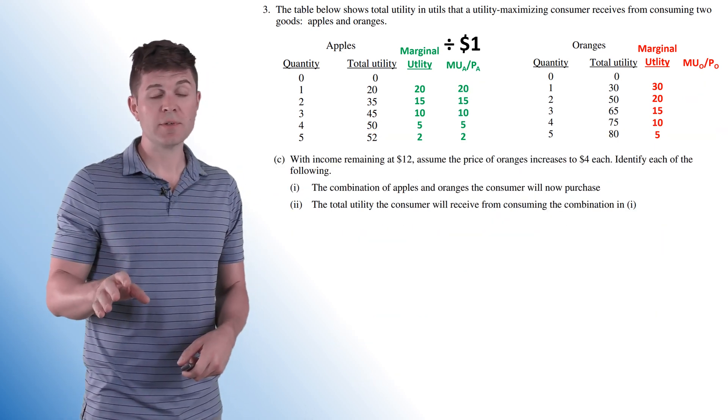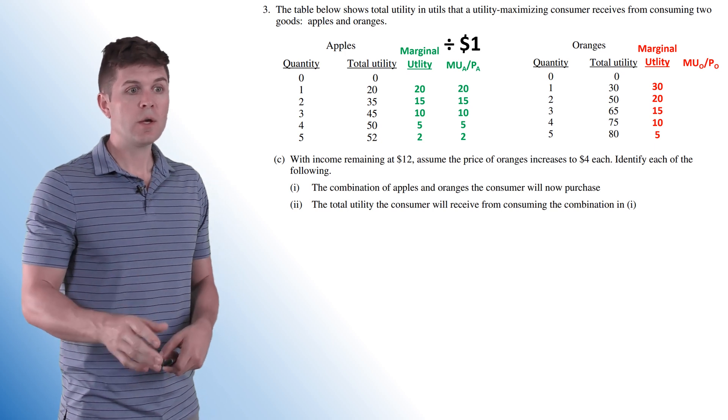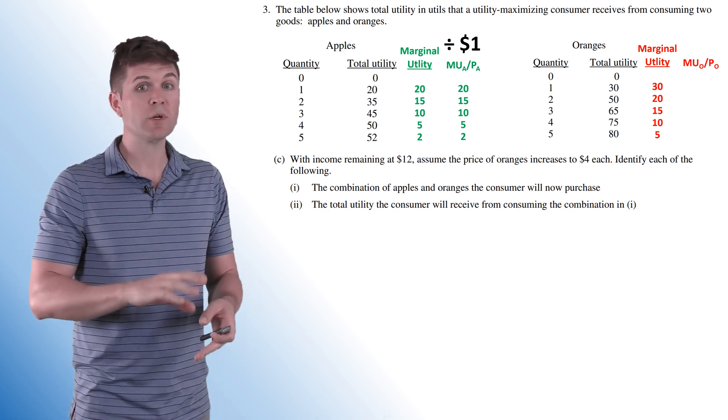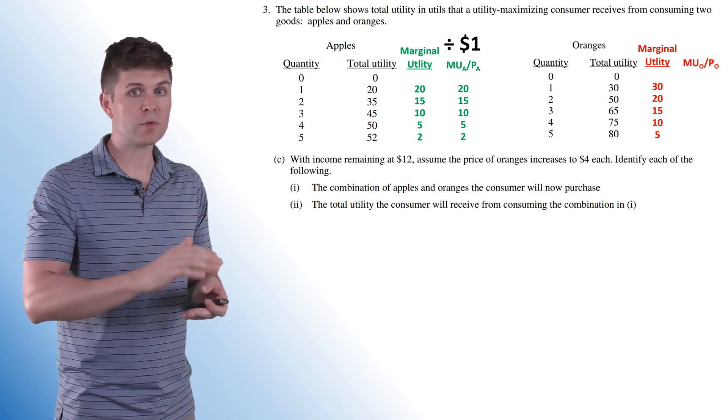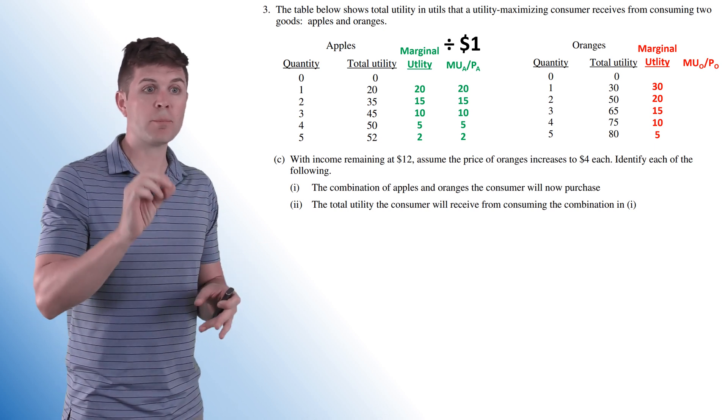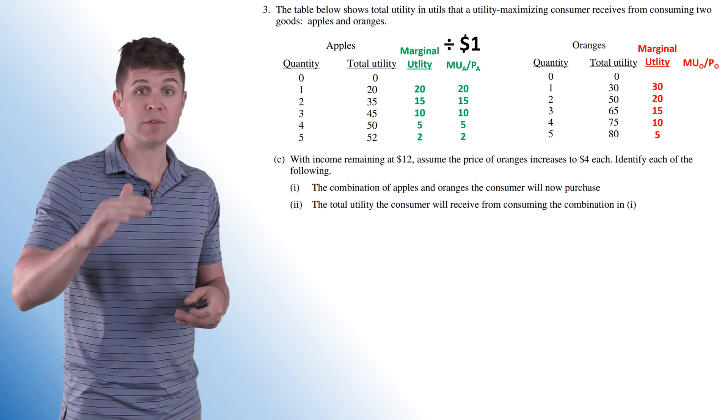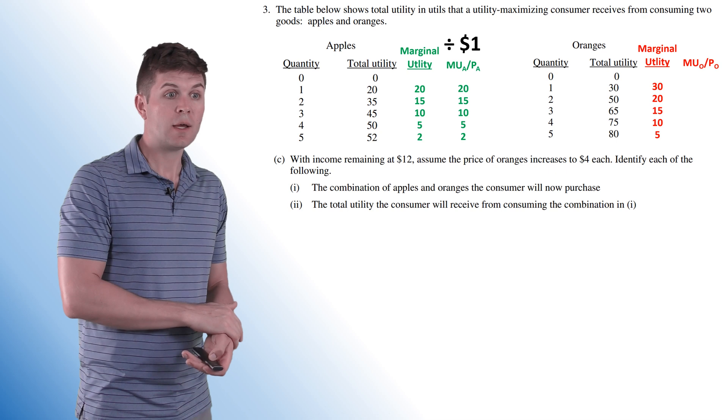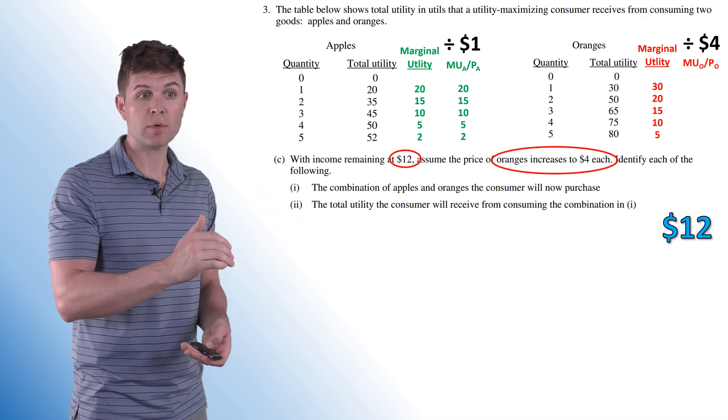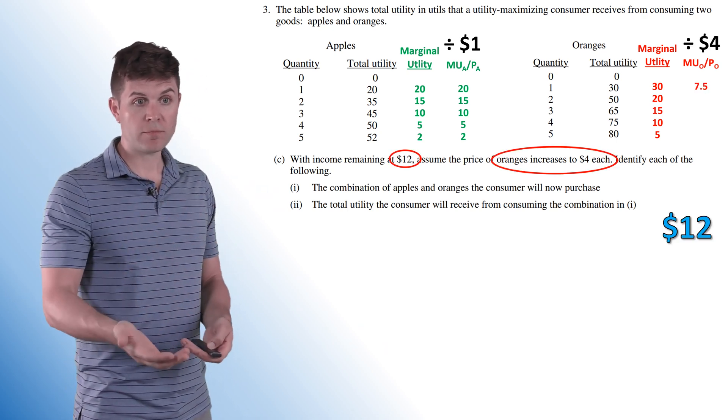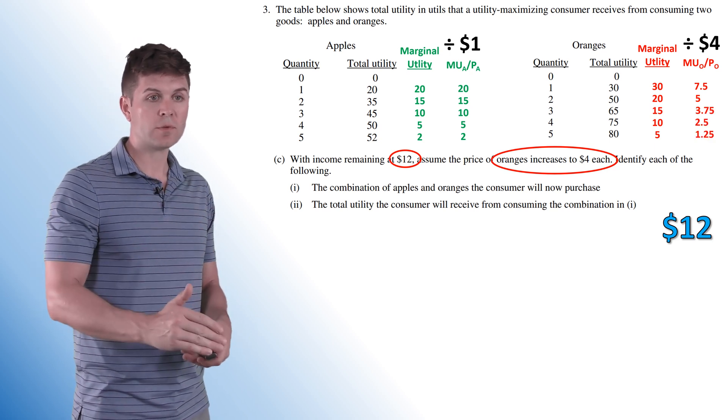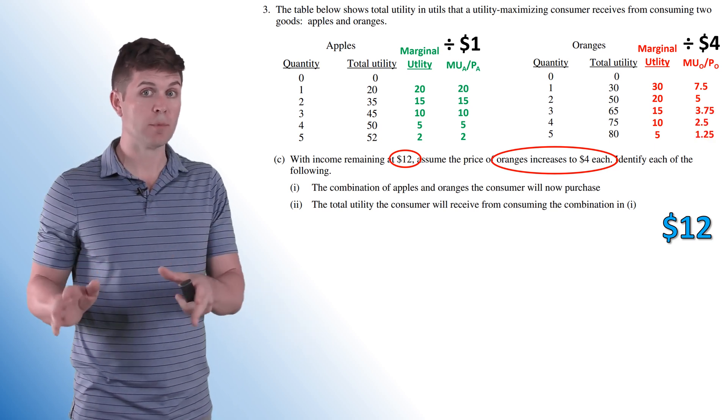Part C. We're keeping income the same, $12. We're assuming that the price of oranges now increases to $4 each. Whenever the price of a good goes up and marginal utility, total utility, everything else stays the same, the per dollar marginal utility is going to decrease. In this case, we're now going to take marginal utility and we're going to divide it by four. So 7.5, 20 divided by four is five, and so forth. Now we've got our new per dollar marginal utility.